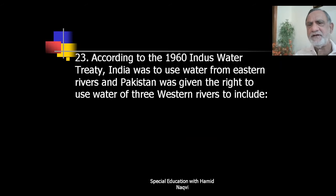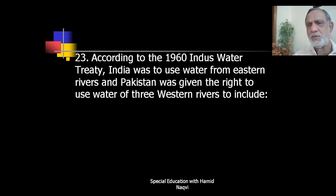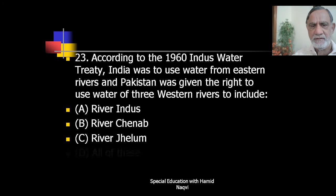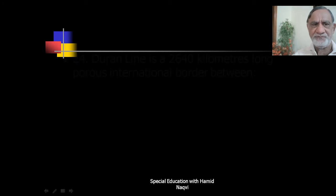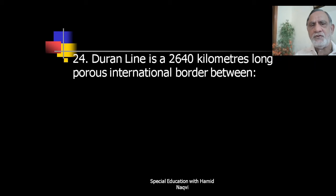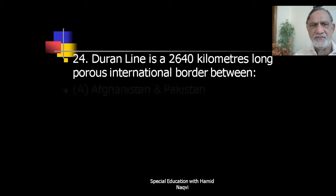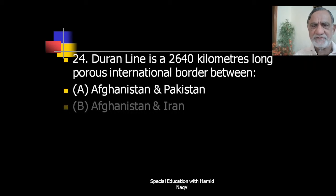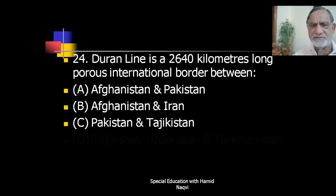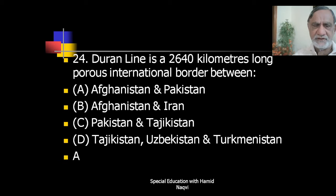According to the 1960 Indus Water Treaty, India was to use water from eastern rivers and Pakistan was given the right to use water of three western rivers — the answer is all of these: river Indus, Chenab, and Jhelum. The Durand Line is a 2,640-kilometer-long porous international border between Afghanistan and Pakistan.